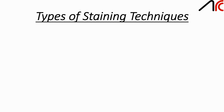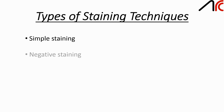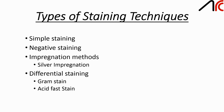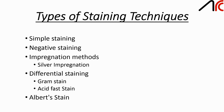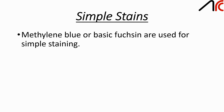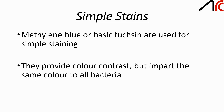There are many types of staining techniques. Some of them are simple staining, negative staining, impregnation staining (in which a subtype is silver impregnation), differential staining (which includes gram staining and acid fast staining), and the last one is Elbert stain. Let's start with simple staining. Methylene blue is used for simple staining. It provides color contrast, but there is a drawback as it imparts the same color to all bacteria.